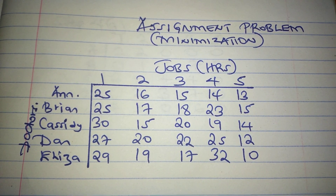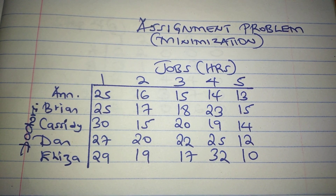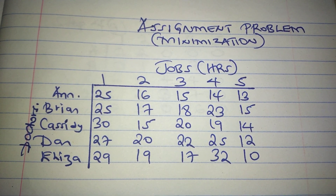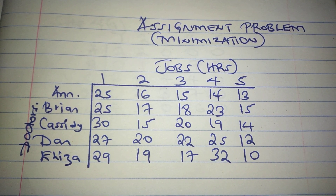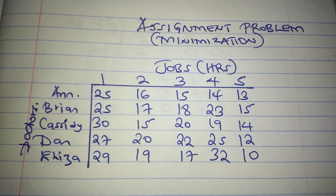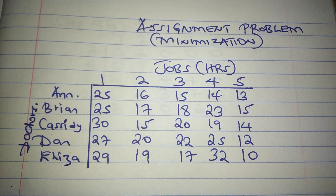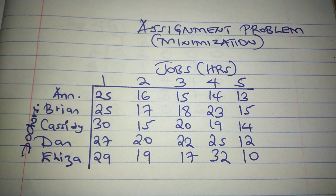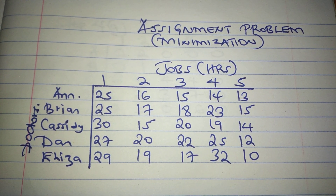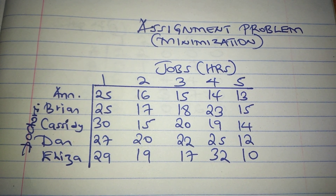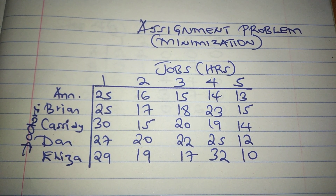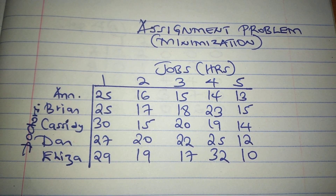There are two types of assignment problems: number one, minimization problem; number two, maximization problem. In the HR department, the assignment model could be used to assign employees to tasks. In the production department, it could be used to assign machines to production jobs. In the ICT department, the model could be used to network computers. It could also be used to assign fleets of aircraft to particular trips or to assign school buses to routes.